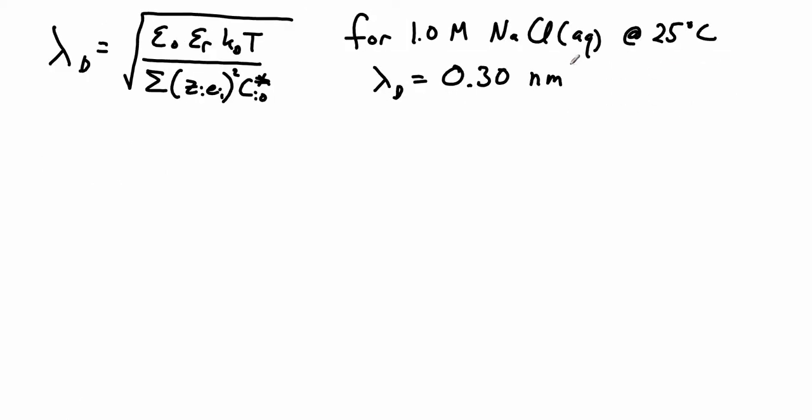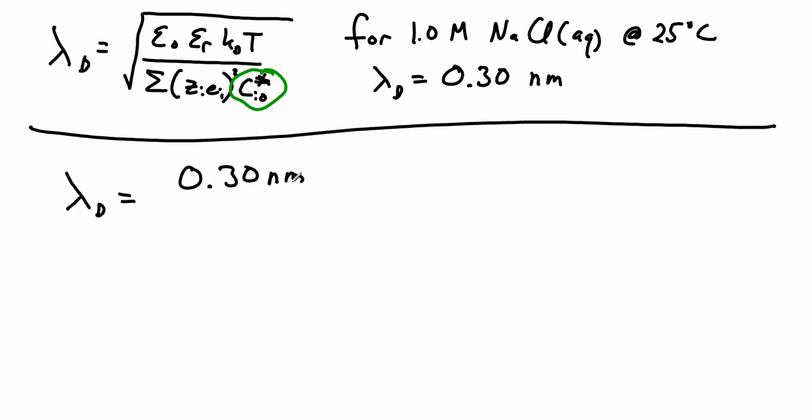We saw earlier that for an aqueous solution of sodium chloride at room temperature, we got a Debye length of 0.3 nanometers when working with one molar. Our problem uses a much lower concentration. The only thing we're changing is concentration, so we can take everything else including conversion factors and pack them into one factor. The Debye length equals 0.30 nanometers over the square root of ionic strength. For a one-to-one electrolyte like sodium chloride, ionic strength is approximately equal to the concentration in molarity.